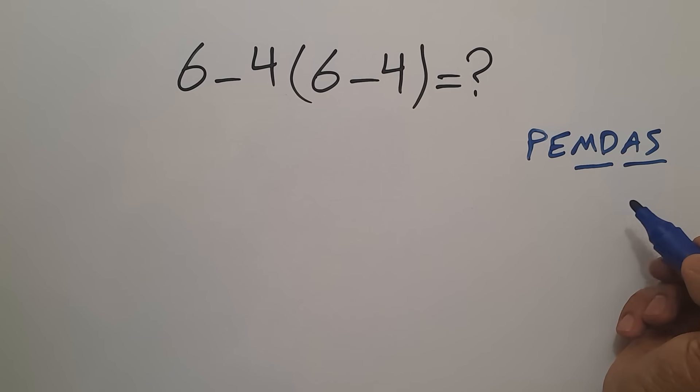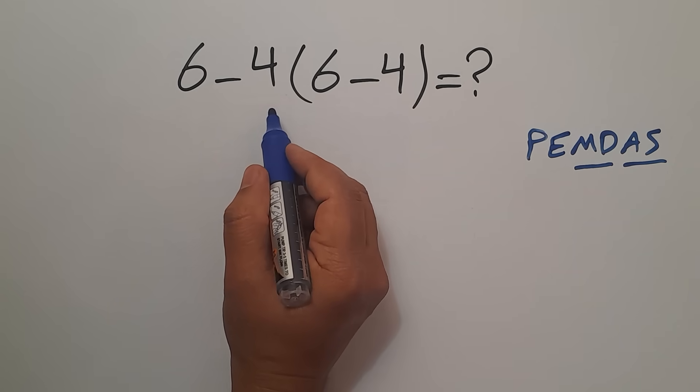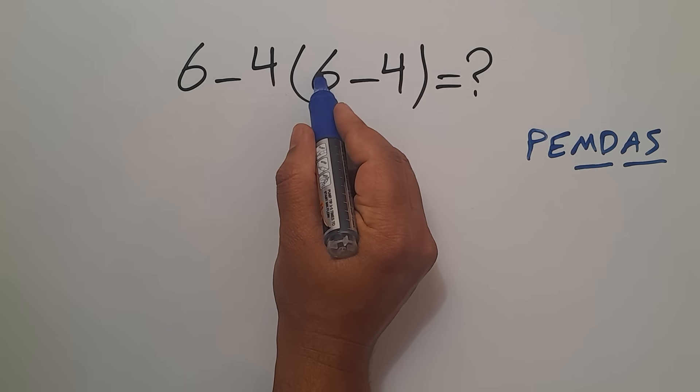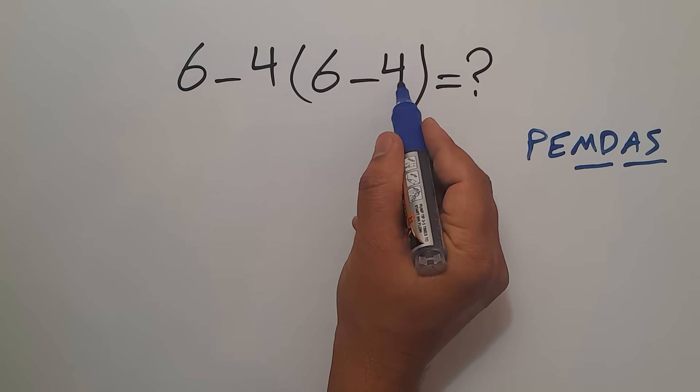So here first we do this parentheses. Inside these parentheses we have 6 minus 4 which equals 2.